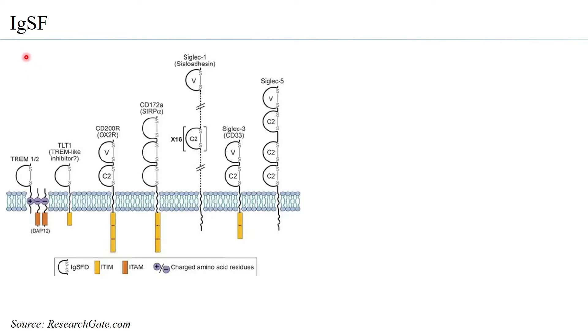The immunoglobulin superfamily adhesion molecules — IGSFs — are so named because they have typical immunoglobulin folds, just as antibodies have immunoglobulin folds in their structure. Similarly, IGSFs also have immunoglobulin folds, which is why they are called immunoglobulin superfamily adhesion molecules.